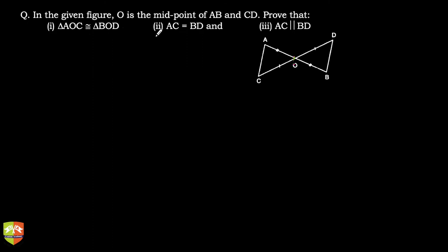Now in this question it's given that O is the midpoint of AB. So this point is the midpoint of AB. So this is AB and this is CD.